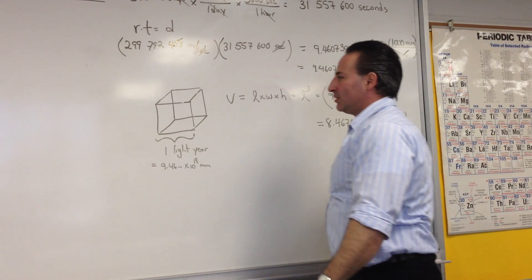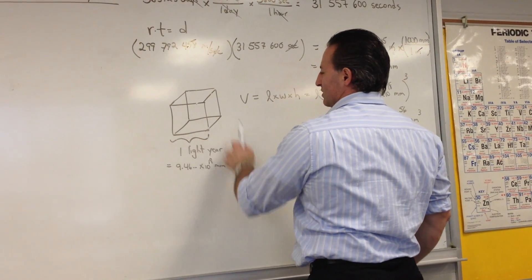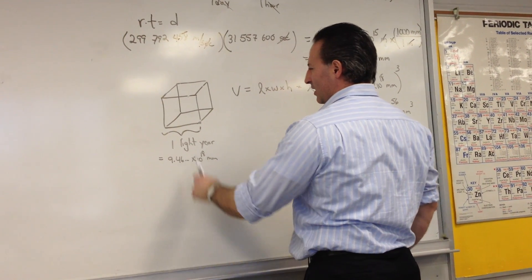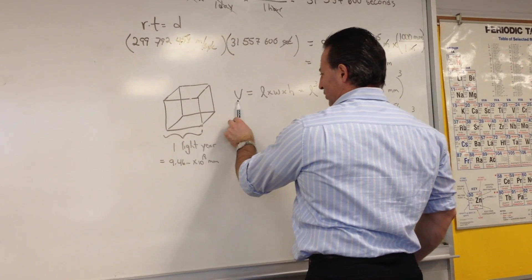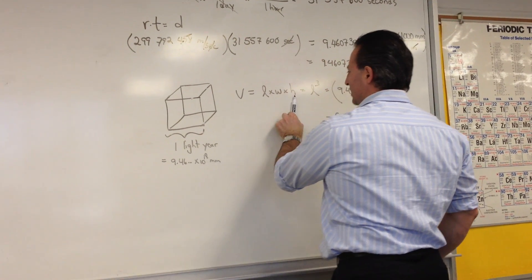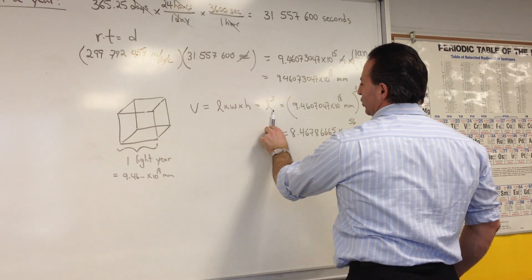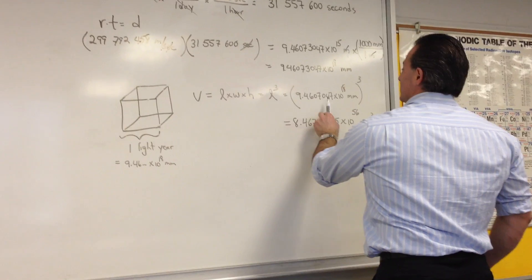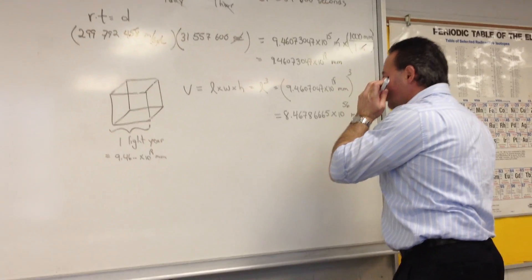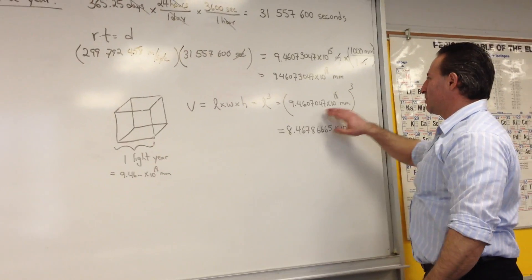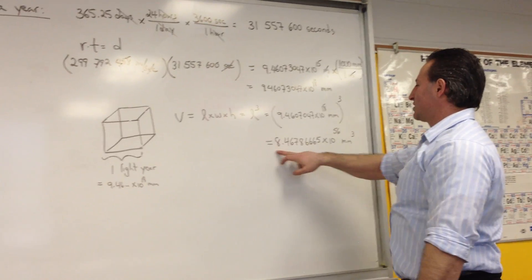Then we recall that a cube has all sides the same length, and the volume of a cube is length times width times height. But since all the edge lengths are the same, we can substitute L times W times H by L cubed, which is equal to this number with units of millimeters. So we raise this to the power of 3, and it gives us this number.